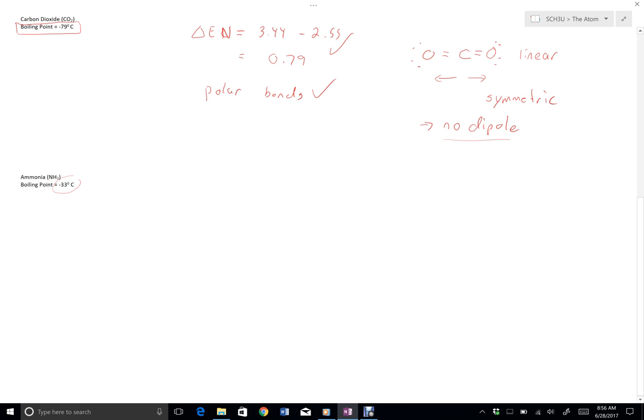All right, our last example here will be ammonia, minus 33. Now ammonia is kind of interesting because minus 33 isn't that high, it's not that low. So our prediction here is that this is going to be a dipole, but that it's going to be fairly weak. So let's see how that works out. First of all, delta EN.